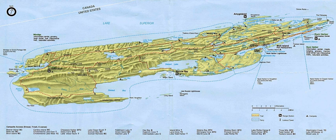Isle Royale National Park consists of one large island surrounded by over 450 smaller islands, although only approximately 110 of these islands are formally named.